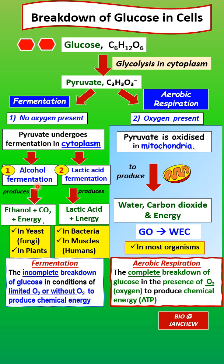There are two types of fermentation: alcohol fermentation and lactic acid fermentation. Alcohol fermentation occurs in yeast and in plants that are in water-logged soil. In alcohol fermentation, the pyruvate is broken down to produce the final products of ethanol — a type of alcohol — and carbon dioxide, with the production of energy.